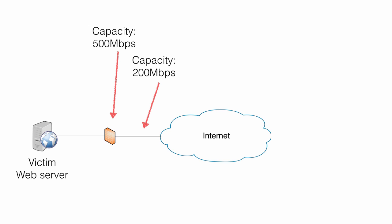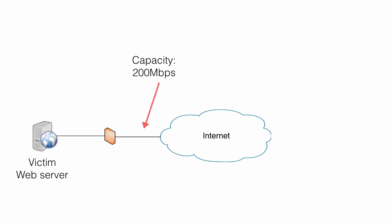If the link or the firewall is exhausted, it will start dropping packets. The result of this is transmission errors and eventually outage of services — the web page will become slow or unresponsive. So if the weakest link is 200 megabits per second, all it takes to do a denial of service attack is to generate more than 200 megabits per second of traffic.